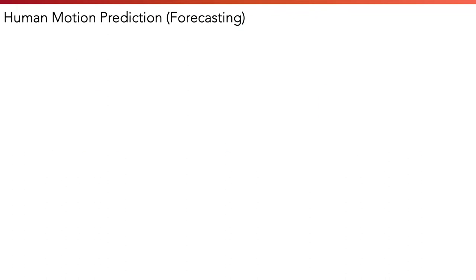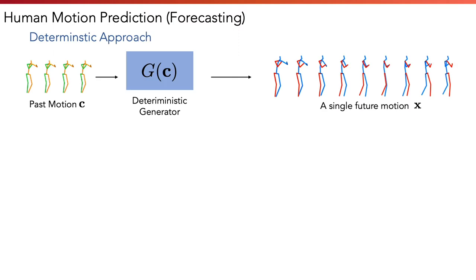There are two types of approaches for human motion prediction. The first one is the deterministic approach, where we learn a deterministic generator, typically a neural network, to map the past motion to a single future motion. Because the future motion of a person is usually uncertain, a clear drawback of this approach is that it cannot capture multiple possible future motions.